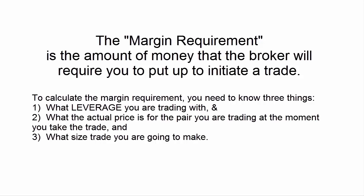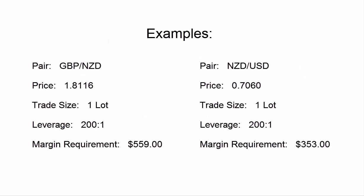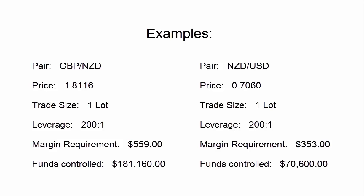No matter what leverage you're using, the margin requirement for a one-lot trade can vary significantly depending on what pair you're trading. For example, for GBP/NZD at one lot with 200 to 1 leverage, the margin requirement is $559. But for the same trade of one lot at 200 to 1 leverage for NZD/USD, the margin requirement is only $353. This is because of the difference in the total amount of funds being controlled by a one-lot trade in each of the two pairs.